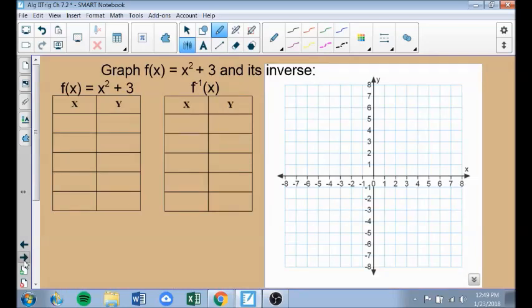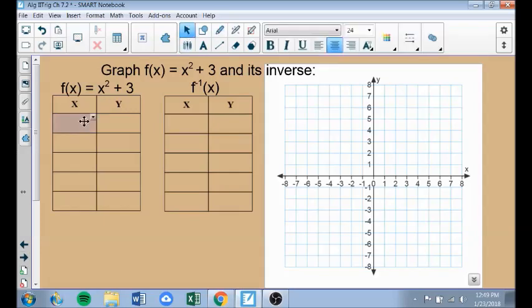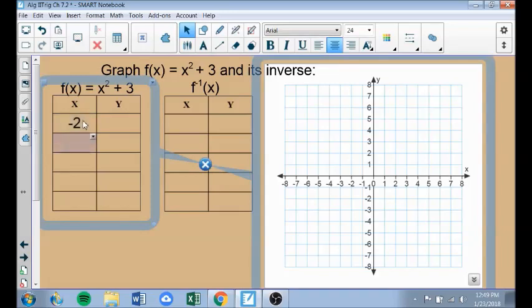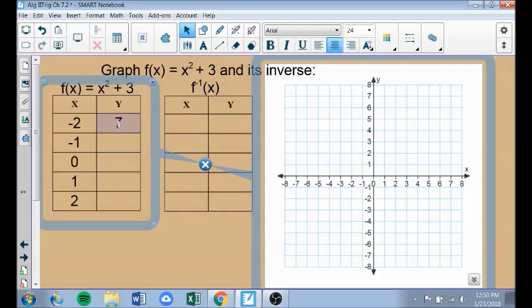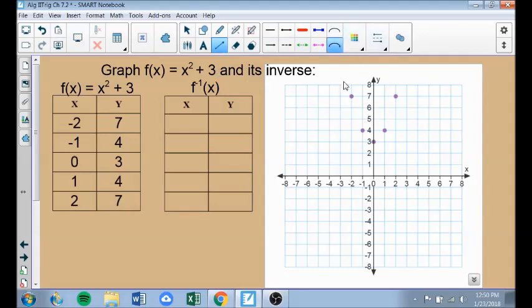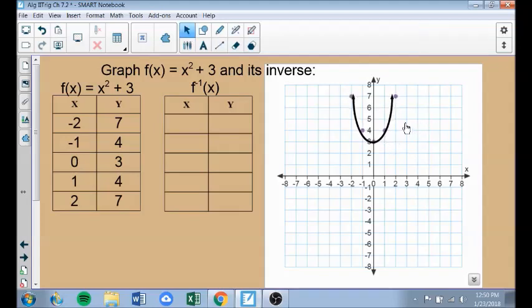We're going to take the function Y equals X squared plus 3 and graph it, and graph its inverse. First let's do X squared plus 3. I'm going to plug in numbers negative 2 to 2. This X squared plus 3 is a parabola that's been translated up 3 units. So 2 squared is 4, plus 3 is 7. 1 squared is 1, plus 3 is 4. 0, 3, then 4, then 7. That gets me this parabola right here.